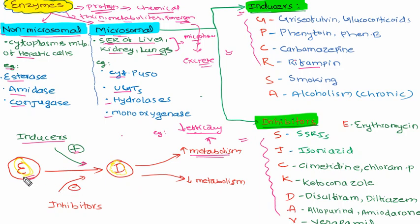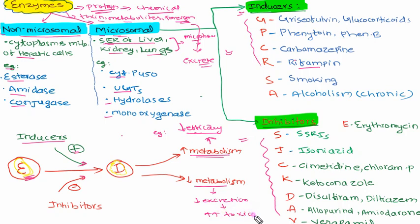Regarding inhibitors: inhibitors will inhibit the microsomal enzyme activity, which means drug metabolism is decreased. Less excretion occurs, and that leads to increased toxicity. In some cases efficacy may increase, but when the drug accumulates, it will ultimately lead to toxicity.